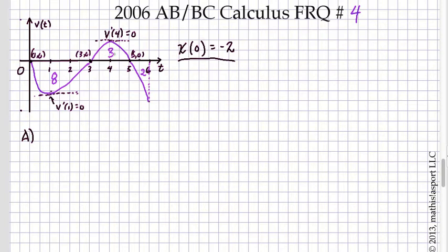Then from 3 to 5, the particle moves to the right, and it moves a total of 3 units to the right. Finally, in the interval from 5 to 6, it moves an additional 2 units to the left.